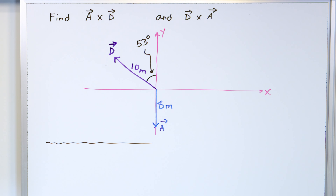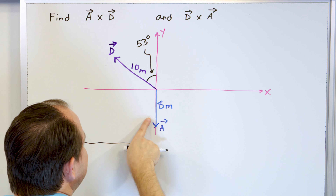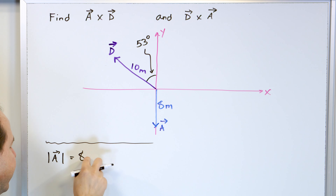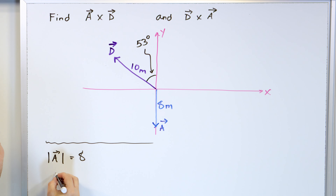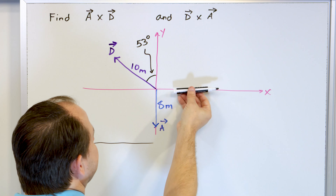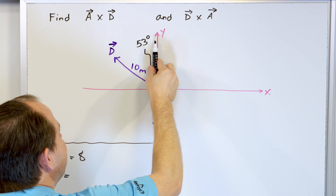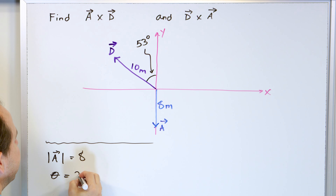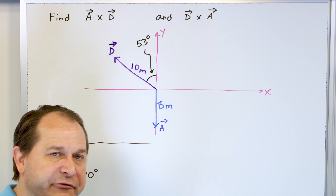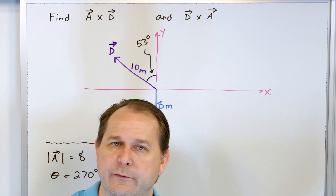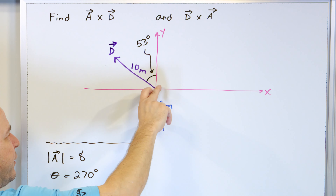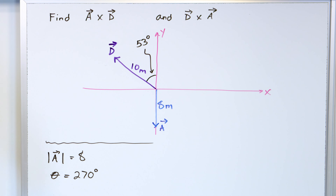Let's look at vector A. The magnitude of vector A is given in the diagram as eight. If the X axis is zero, positive angles go counterclockwise — 90 degrees, 180 degrees, 270 degrees. Since the vector is purely on the negative Y axis, it's at 270 degrees. You want to write your angles measuring the position of the vector positive from the X axis, just like in trigonometry. 270 degrees specifies the length and direction of this vector.